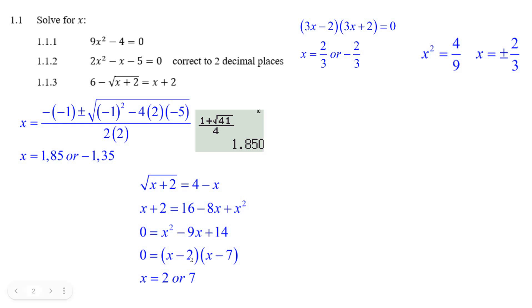Well, 2 times 7 is 14. And a negative times a negative gives me a nice positive there. Minus 2x minus 7x. Hey, x equals 2 or 7.